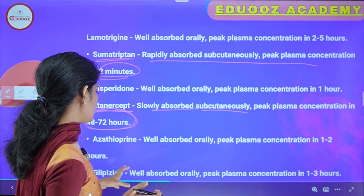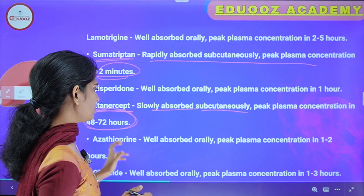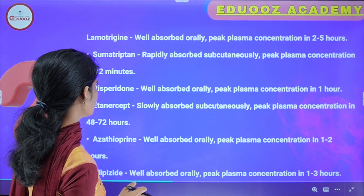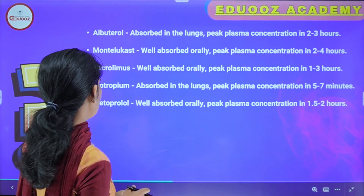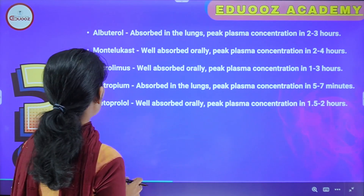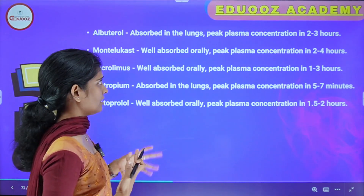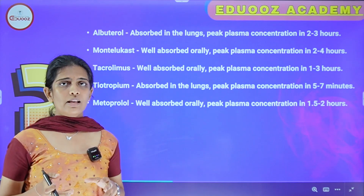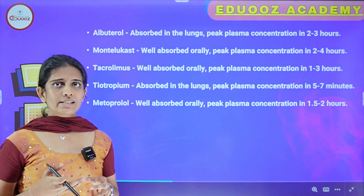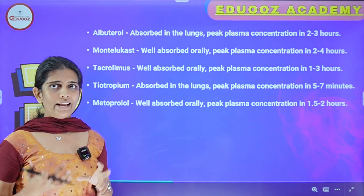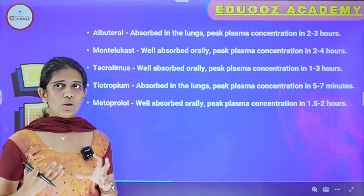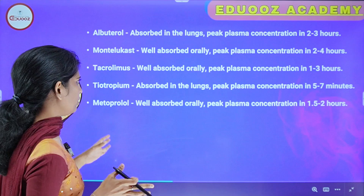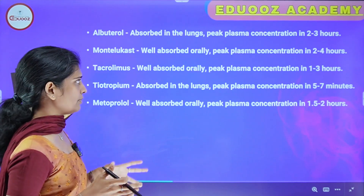Glipizide is well absorbed orally and peak plasma concentration is within 1 to 3 hours. Albuterol is absorbed in the lungs with peak plasma concentration in 2 to 3 hours. Montelukast is well absorbed orally and peak plasma concentration is within 2 to 4 hours. Tacrolimus is also well absorbed orally with peak plasma concentration in 1 to 3 hours.